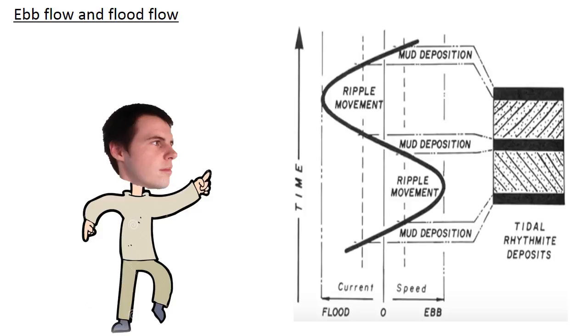As can be seen in figure 2, it is the alternating of the tidal current velocities which enable the formation of heterolitic bedding. The ebb and flood flows enable ripple formation and the stagnant water allows for the deposition of suspended mud. Ron will now discuss flasor bedding.